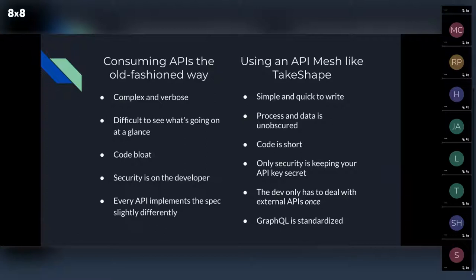Likewise, using APIs the old-fashioned way, it's difficult to see what's going on at a glance. I had to litter my code with comments and explanatory notes just to explain to myself what I was doing. It would be miserable if someone else took on the project because they'd have no idea what was going on in that file — especially important in production environments. But with an API mesh, the code is very short — just one request. The data going in is unobscured; you know exactly the format going in and coming out. The process isn't hidden. Something like TakeShape also provides a GUI to visualize it if you want.